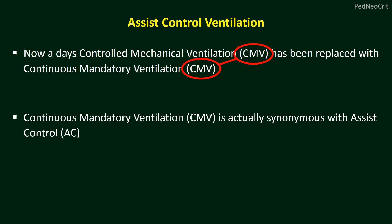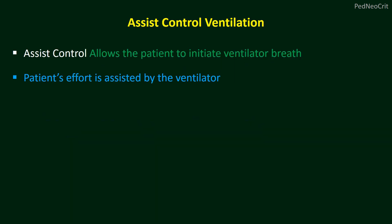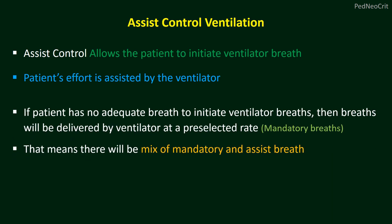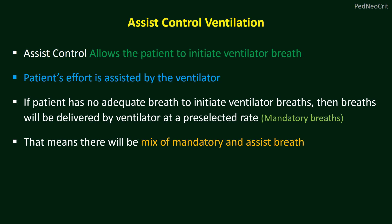Continuous mandatory ventilation is actually synonymous with assist control or AC. In assist control mode, it allows the patient to initiate ventilator breaths, and the patient's effort is assisted by the ventilator. If the patient does not take adequate breaths to initiate ventilator breaths, then breaths will be delivered by the ventilator at a preselected rate — those are mandatory breaths.